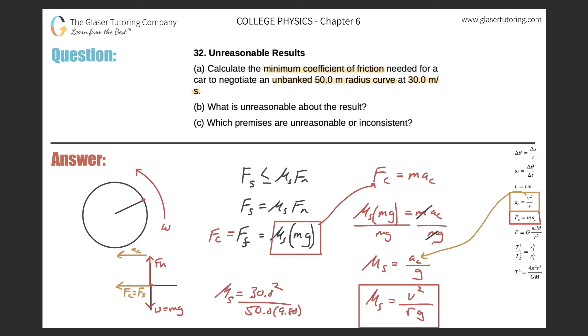And just calculate it. So we got 30 squared divided by 50 times 9.8, which is 1.84. So I'll put the answer up here on the left. I'll put it right there on the bottom. Coefficient of static friction is 1.84, and there we go.